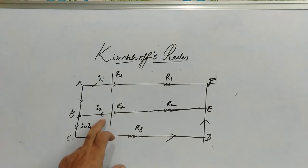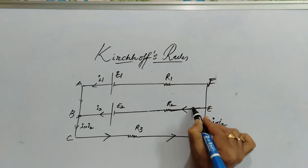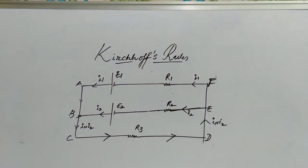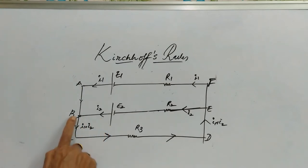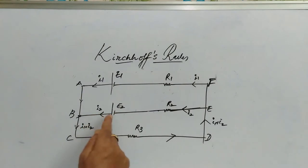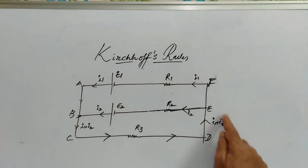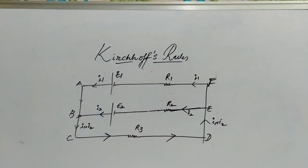We know that if i2 is driven out from the cell, the same current must pass through the negative terminal. Therefore i1 plus i2 comes here and i2 will be passing through this path, so the left out current is i1. So we have applied Kirchhoff's junction rule: i1 from the first cell, i2 from the second cell, giving i1 plus i2 at the junction. i2 passes through the second cell's negative terminal, and the remaining i1 reaches the negative terminal of E1.